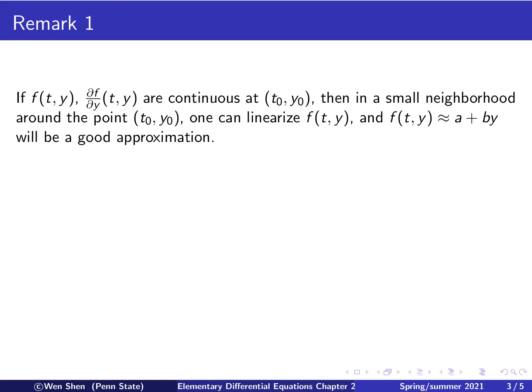Now let's make some remarks. First, recall the assumption: f and the partial derivative of f with respect to y, they are continuous at some point t0, y0. Then we know that in a small neighborhood around that point, we can linearize this function f. We can write f of t, y to be a plus b y, and that would be a very good approximation in a very small neighborhood. Then by the theory for the linear equation, the nonlinear equation more or less behaves in the same way as the linear one, and we can conclude that the solution exists and is unique.